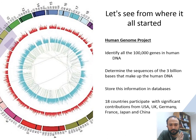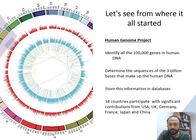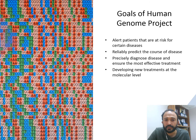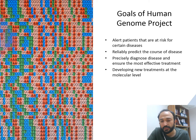Main countries from all over the world — including the USA, Japan, France, China, and others — came together and started working on the Human Genome Project. They came up with the idea of what the goals should be and why it was important to sequence the whole genome.